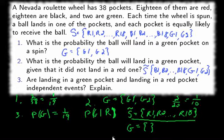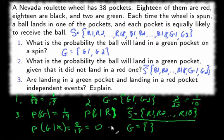So the event G, the event that we land in a green pocket, is empty. And the probability of green given red is 0 over 18 or just plain 0.